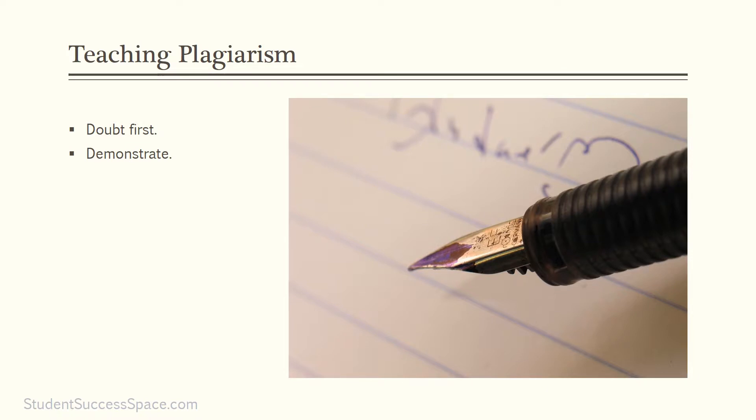Demonstrate examples of plagiarism. Show your students examples and exactly how it can be manifested. Teach them how to paraphrase information and how to cite sources correctly. Show them the consequences and the results of plagiarism.